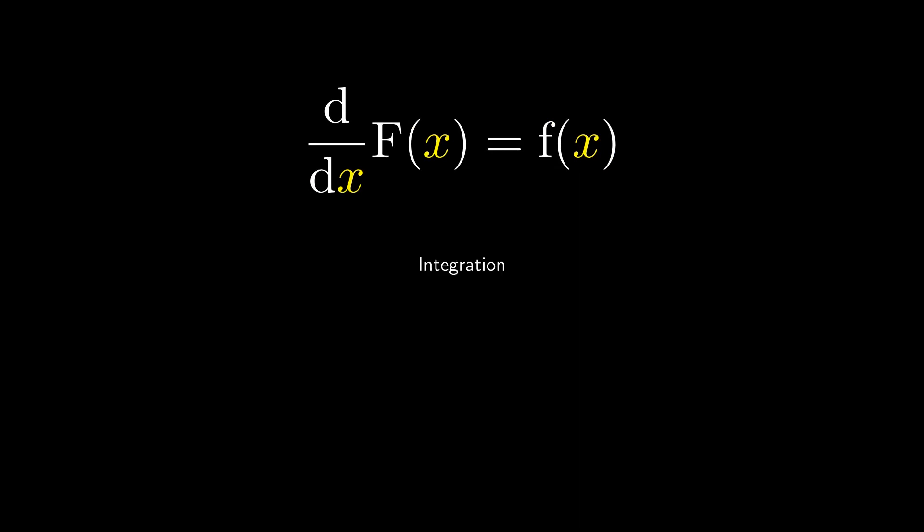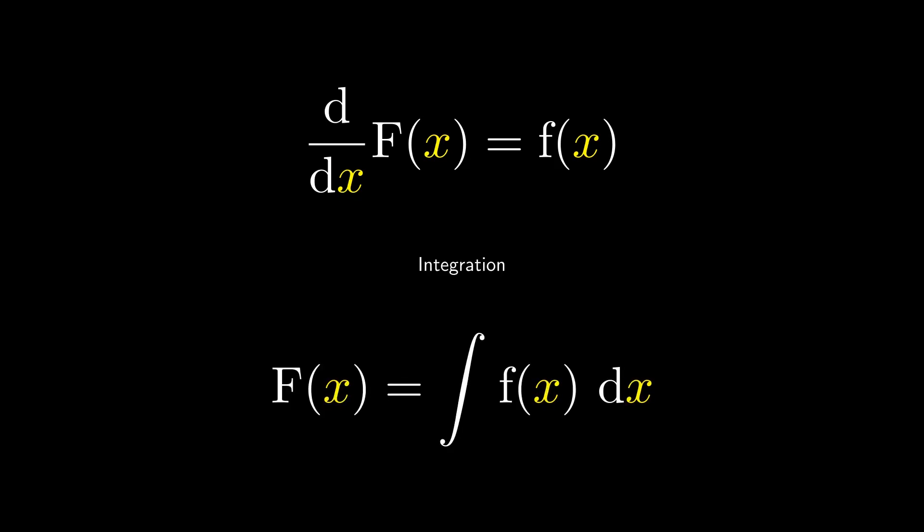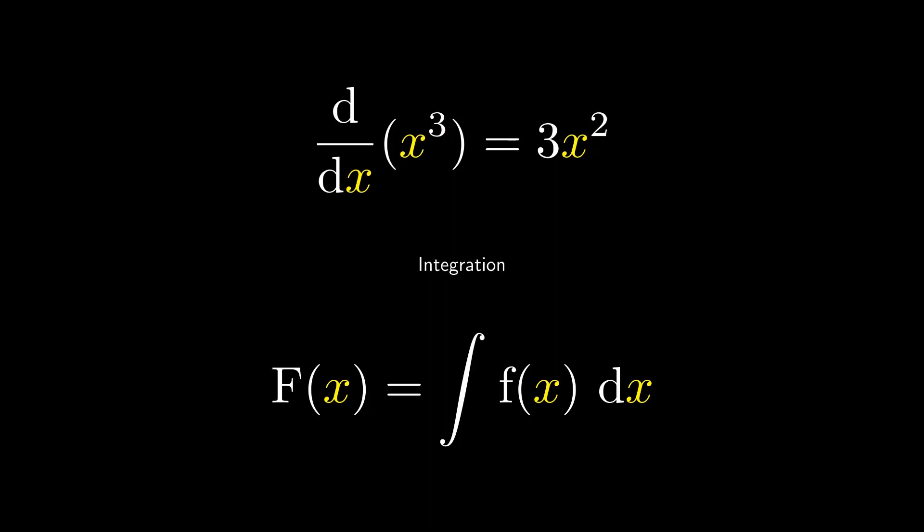Integration at the A levels. You probably already know how to do differentiation of some basic functions. You also probably know that integration is simply the reverse of differentiation. If we want to differentiate the function x cubed, we need to bring the 3 down and reduce the power by 1 to obtain 3x squared.